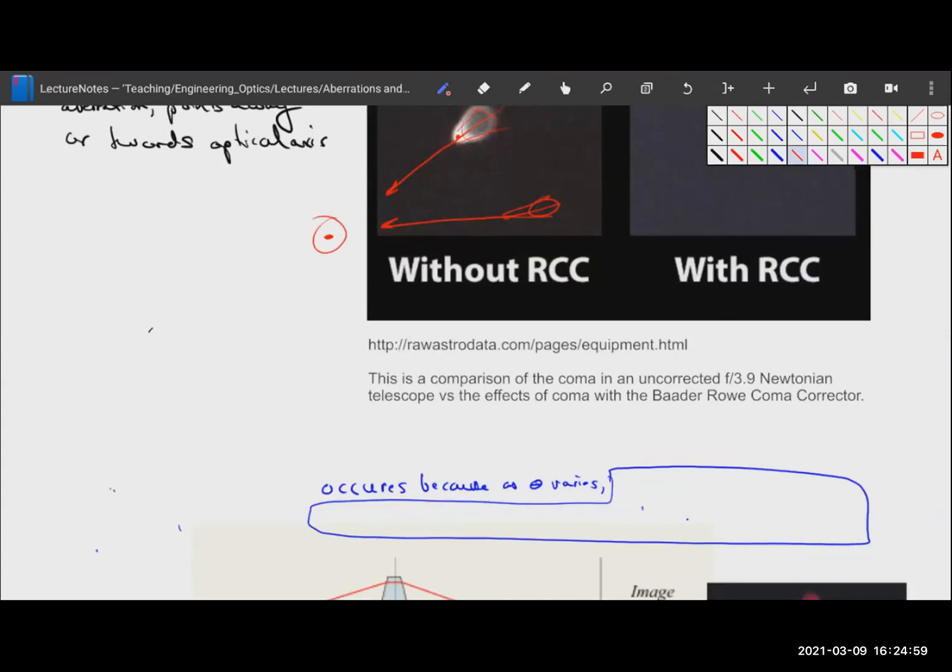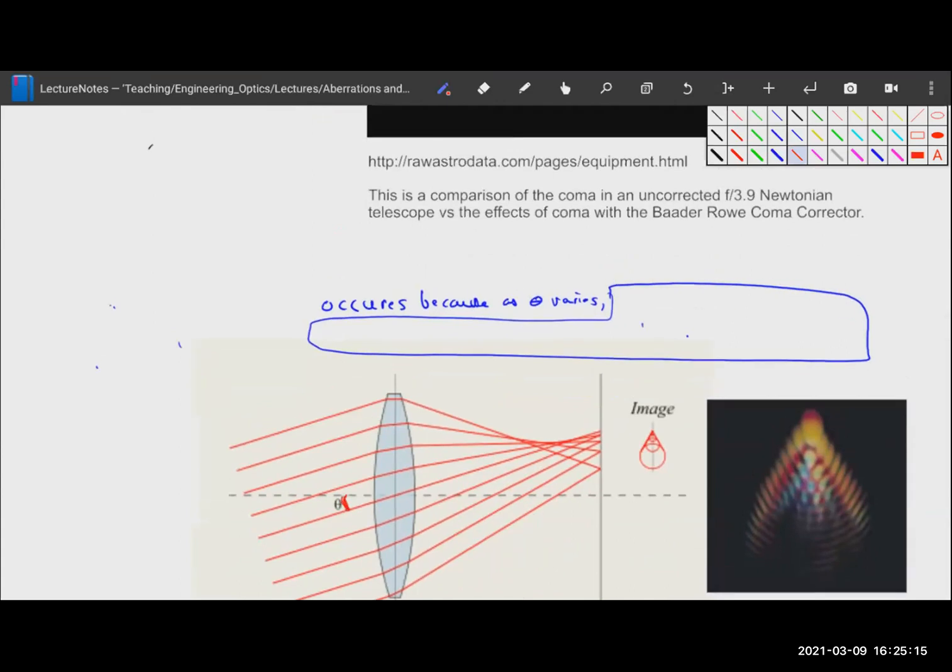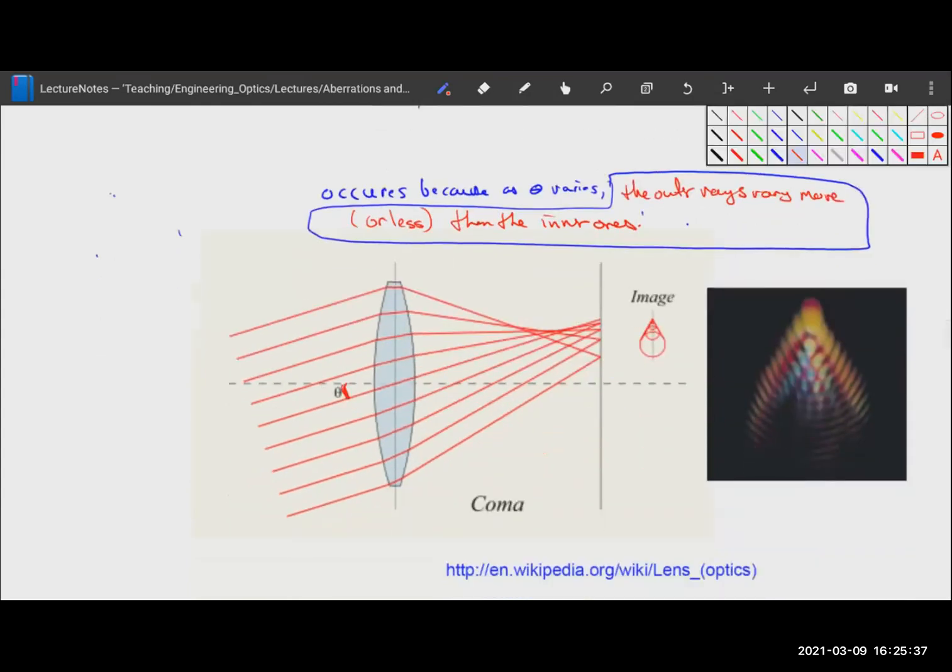This occurs because as your theta varies, the angle of your rays with the optical axis, as theta varies, the outer rays vary more or less than the inner ones. And you can see it on this plot beautifully. The bottom ray does not deviate nearly as much as the top ray.